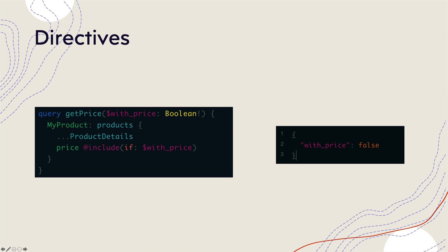Next come directives. Directives are very helpful when you want to query only specific fields. For example, if you want to include a specific field, you can use the @include directive. There are only two directives available in standard GraphQL: @include and @skip. With other GraphQL frameworks you can create your own directives, but that's for a later series. The @include directive takes a boolean — for example, you can pass 'withPrice' as a variable to decide whether to display the price, and that variable is passed in as false to exclude it.